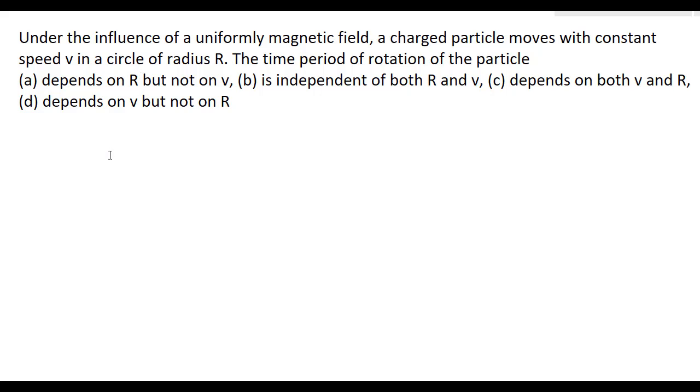Now we know that the radius R is equal to mv divided by qB, where m is the mass of the particle, v is velocity, B is the magnetic field, and q is the charge.